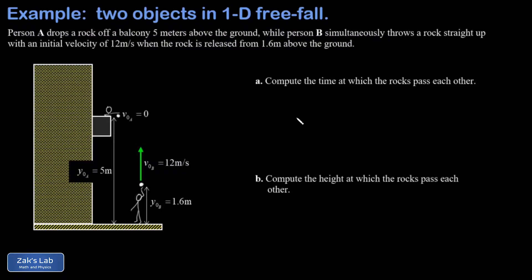The key to a one-dimensional kinematics problem like this with two objects is to write down the position as a function of time for each object using the same coordinate system.